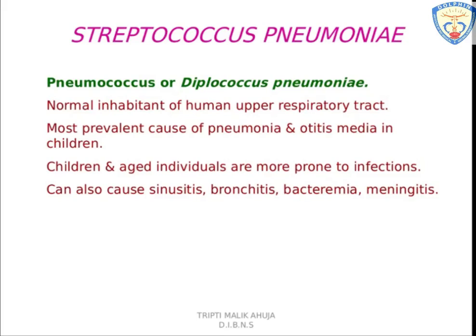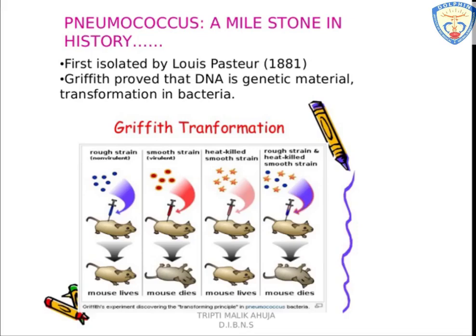Children having sickle cell anemia have a higher chance of getting the infection. There is a milestone in history associated with pneumococcus. It was first isolated by Louis Pasteur. You might remember Griffith's experiment, which used the rough and smooth strains of this bacteria to prove that DNA is the genetic material. He carried out experiments termed transformation.